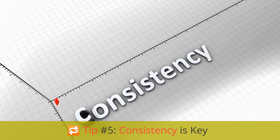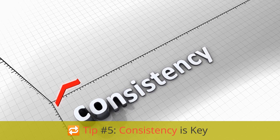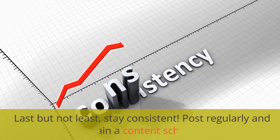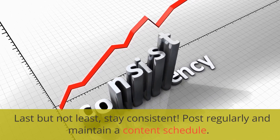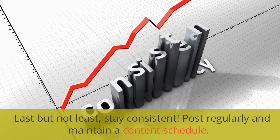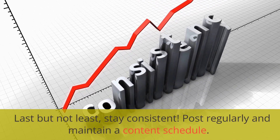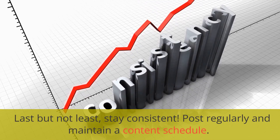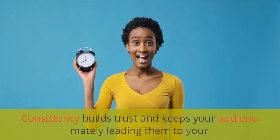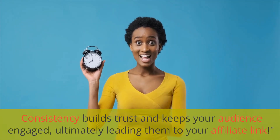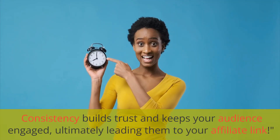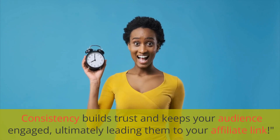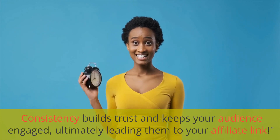Tip 5: Consistency is key. Last but not least, stay consistent. Post regularly and maintain a content schedule. Consistency builds trust and keeps your audience engaged, ultimately leading them to your affiliate link.